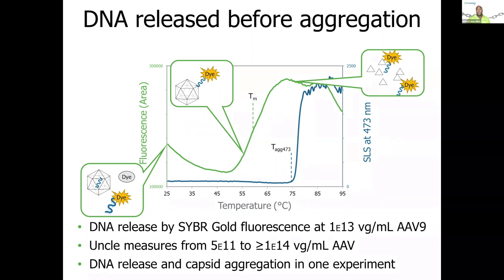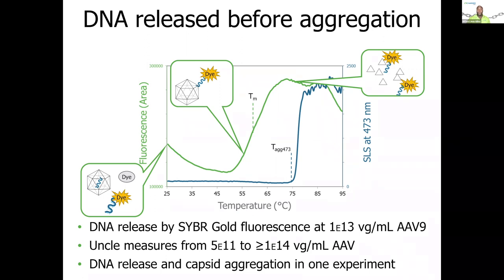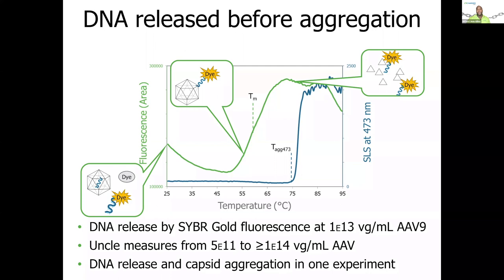What you will note is that this is the exact same sample shown previously. Before, I showed you a melting temperature that coincided very nicely with the temperature of aggregation. As you look here, the melting temperature happens much earlier — this is actually telling you that DNA is ejected or comes off the capsid before the capsid completely unfolds and aggregates. The beauty of having the ability to measure these two different events independently is that you can objectively assess both the ability of your capsid to remain intact but also its ability to retain the DNA, which is ultimately what makes it an interesting therapeutic.